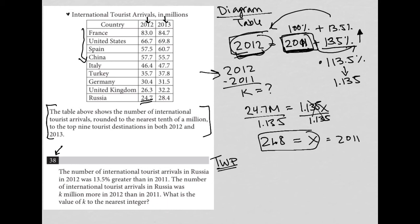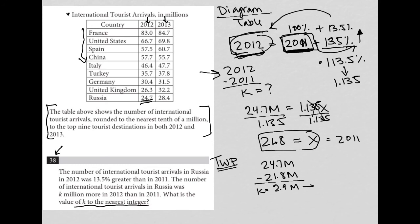In 2012 there were 24.7 million people, and in 2011, according to my calculation, there were 21.8 million people. The difference — put that in your calculator — gives you 2.9 million. So that is my K value. But the question wants me to round K to the nearest integer, so 2.9 becomes 3. Therefore, 3 is the correct answer to this question.